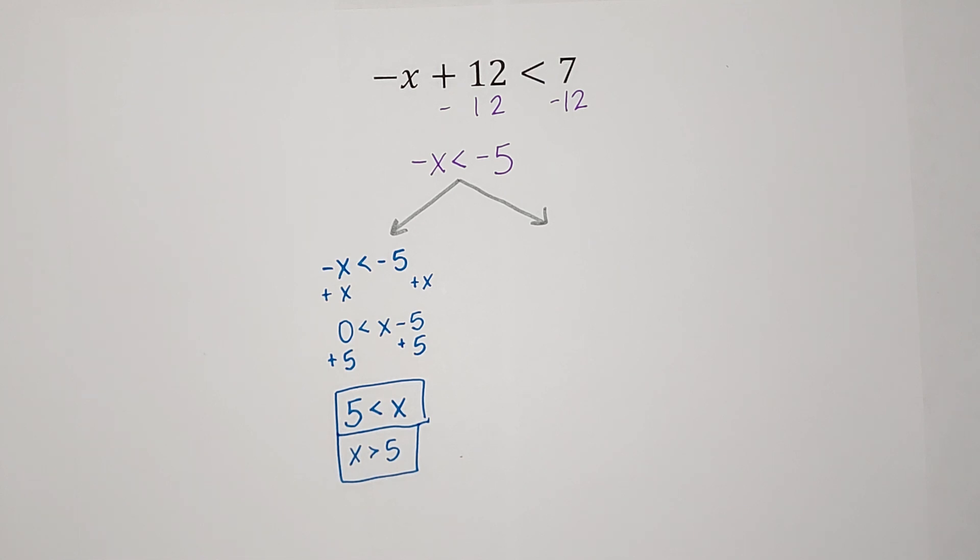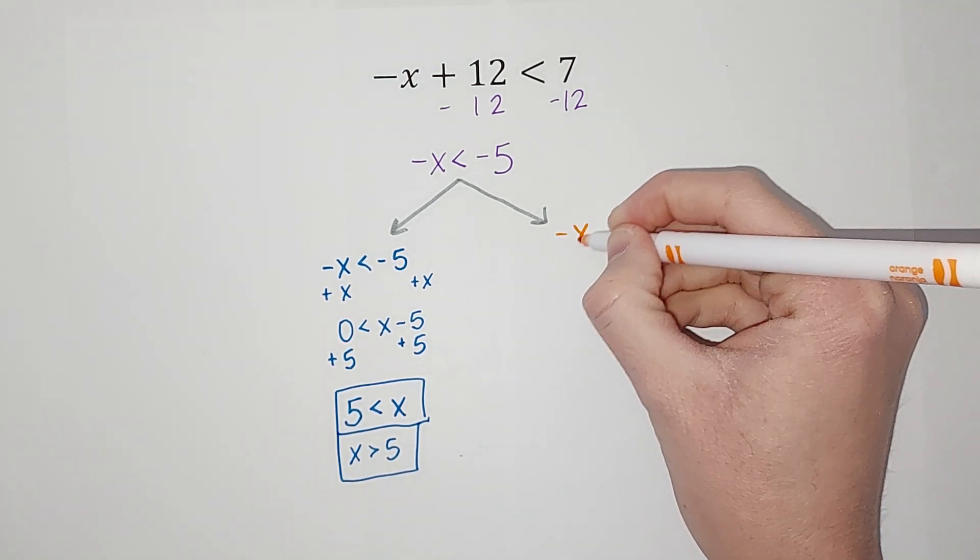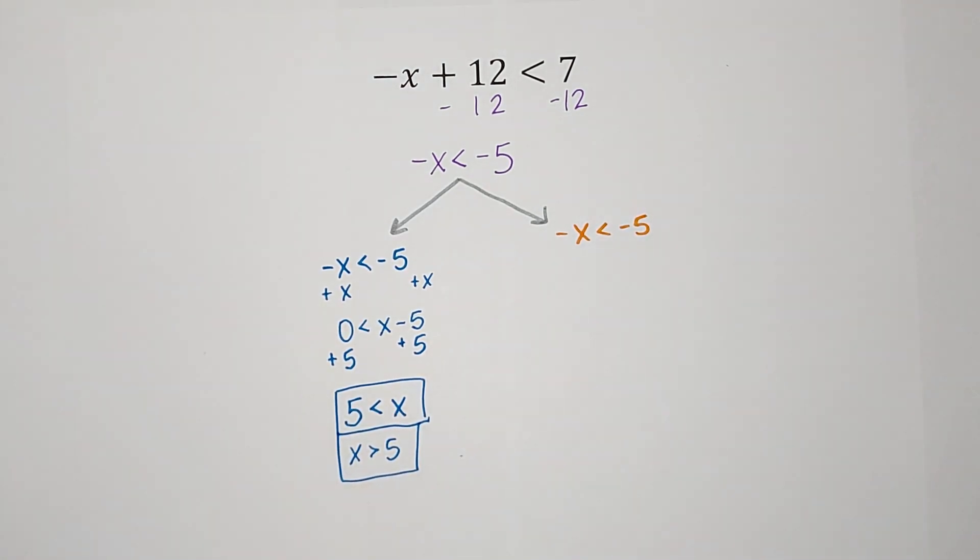Another way that we could get x to be positive would be, here we go, we've got our negative x is less than negative 5. Another way to get it positive would be to multiply or divide by negative 1.